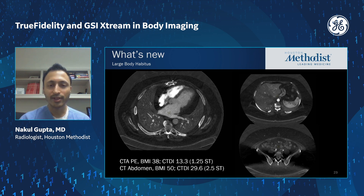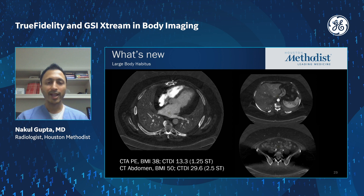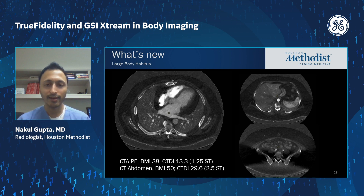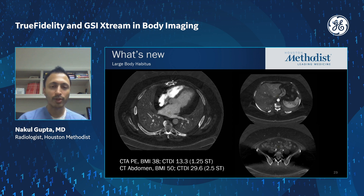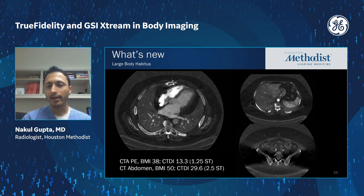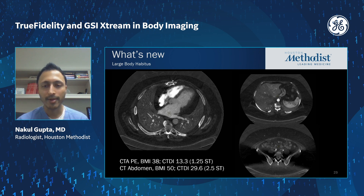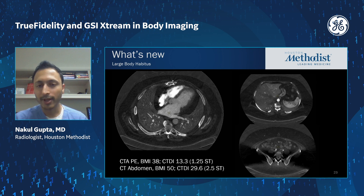What's changed with the Quantex tube and its extra photon flux is that we're able to do GSI on larger patients than before. For PE studies, we would previously have limited GSI to a BMI of 32 or lower. Here's a case with BMI of 38: a 1.25-millimeter slice thickness PE study with a very homogeneous, usable iodine map — not previously expected at that BMI. On the right, a patient with BMI of 50 shows the abdomen is usable despite some streak artifact, though in the pelvis we ran out of photons. So usable in the abdomen at that BMI, but probably not in the pelvis.